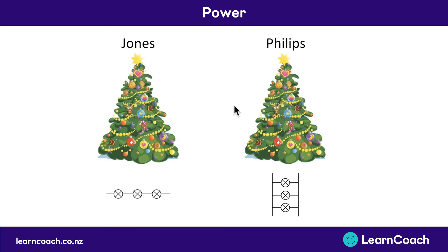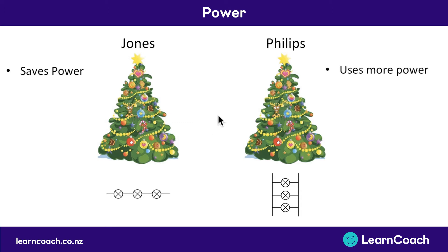I'm going to do three bullet points for each of the series and parallel circuits so that you can compare the two trees, because you're going to have to compare series and parallel in your exams. Series circuits with lights — this Christmas tree is actually going to save power. It uses less power in a series circuit than if you attach the same bulbs in a parallel circuit like the Phillips. So the Phillips Christmas tree would use more power being in parallel, and the Joneses Christmas tree would save power because it's in series.